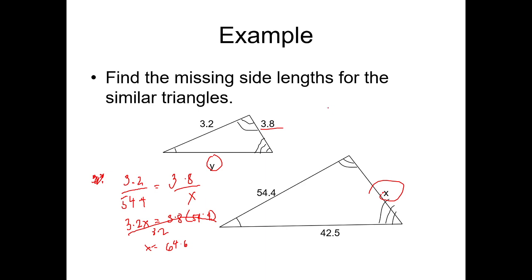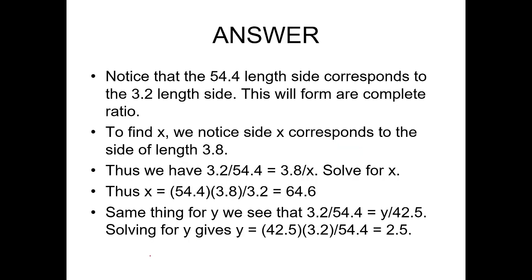So, 3.2 over 54.4 is equal to Y over 42.5. Therefore, 54.4Y equals 42.5 times 3.2. Divide both sides by 54.4. Therefore, you can have now the value of your Y, which is 2.5. These are the values of your X and Y for the example of similar triangles.